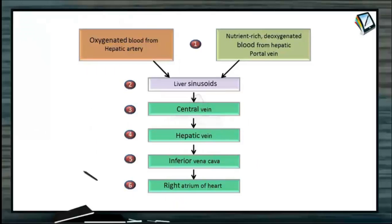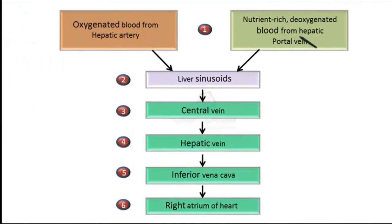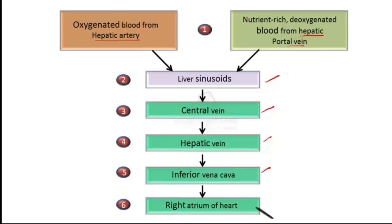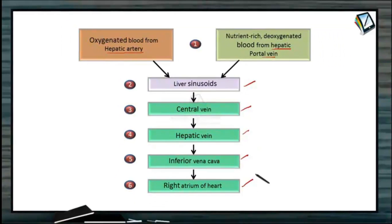The pathway is as follows: nutrient-rich blood from the hepatic portal vein and oxygenated blood from the hepatic artery enter the liver sinusoids. From there they reach the central vein, and all central veins join to form the hepatic vein, which drains into the inferior vena cava. The inferior vena cava then pours the blood into the right atrium of the heart.